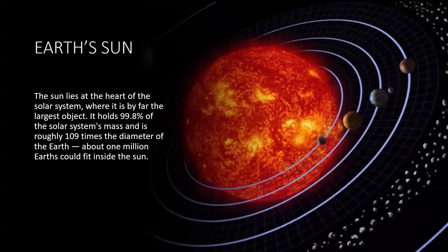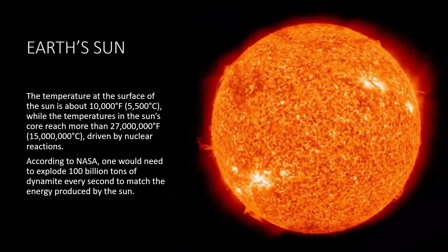As we mentioned, the Sun lies at the heart of the solar system, where it is by far the largest object. It holds 99.8% of the solar system's mass, and is roughly 109 times the diameter of the Earth. About a million Earths could fit inside the Sun. Now, the Earth is not small, but it is very small compared to the size of the Sun. When you think about the scale, it becomes really mind-boggling.